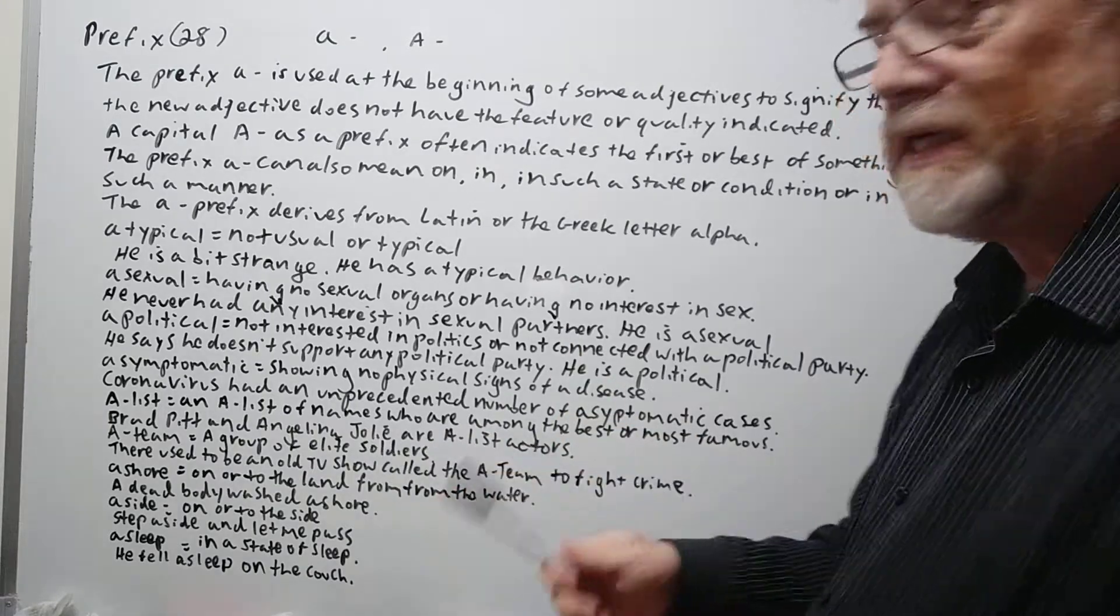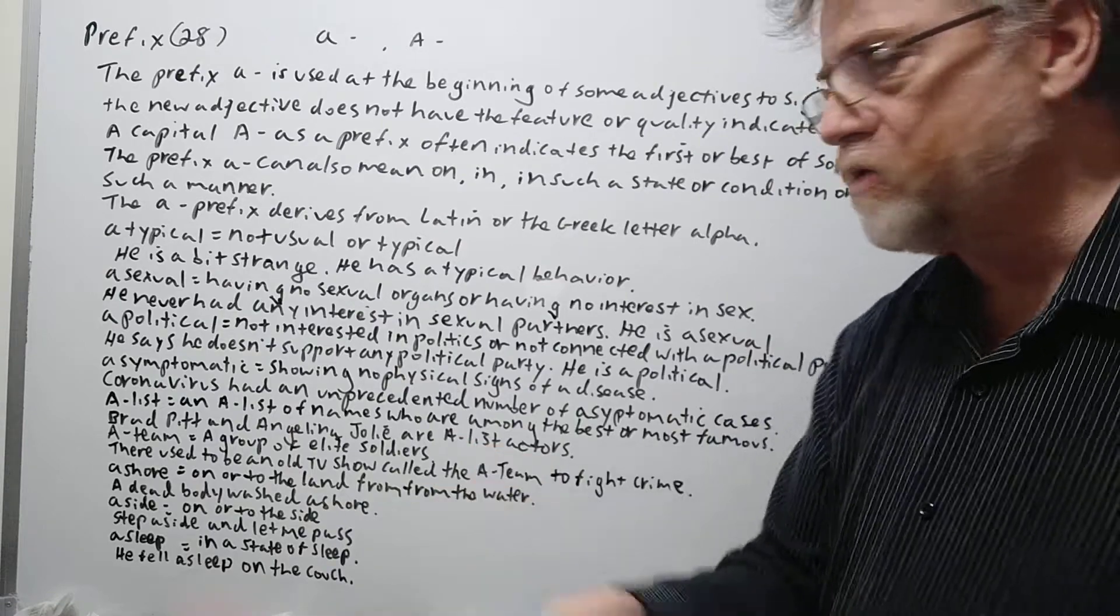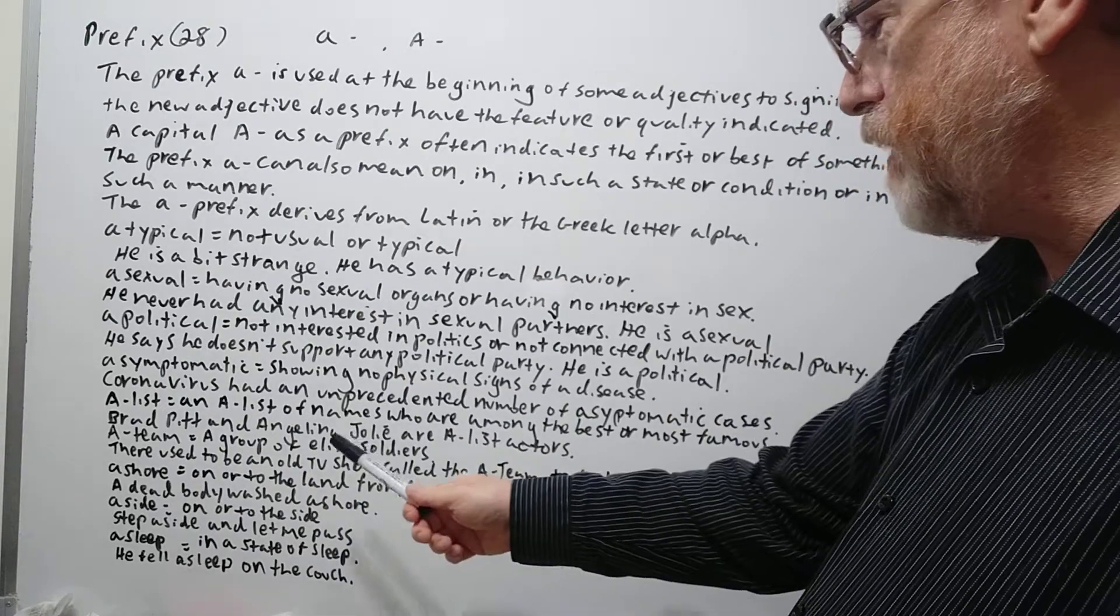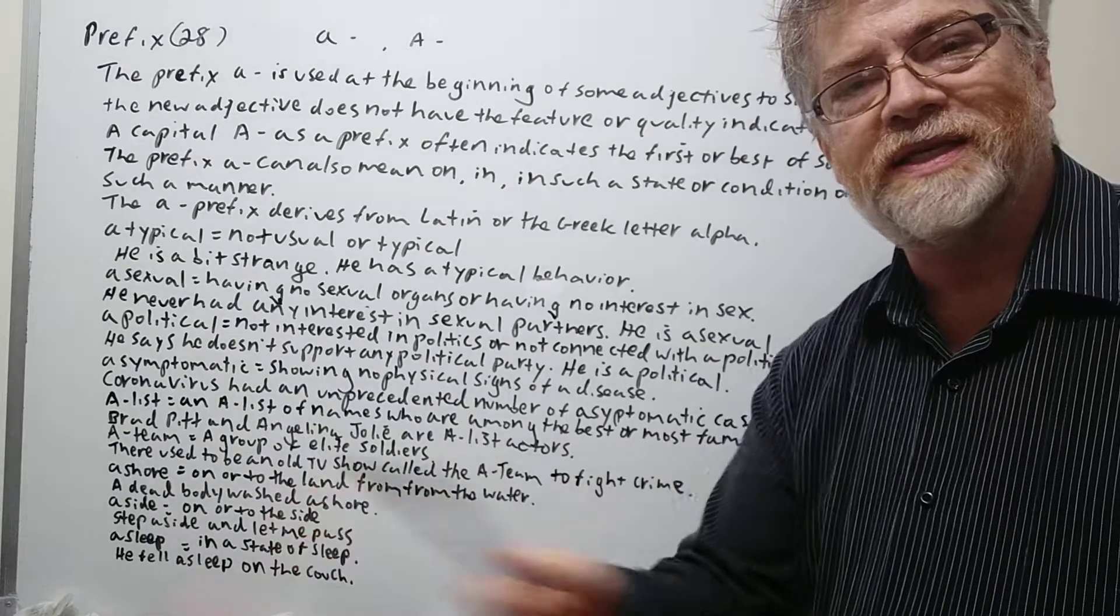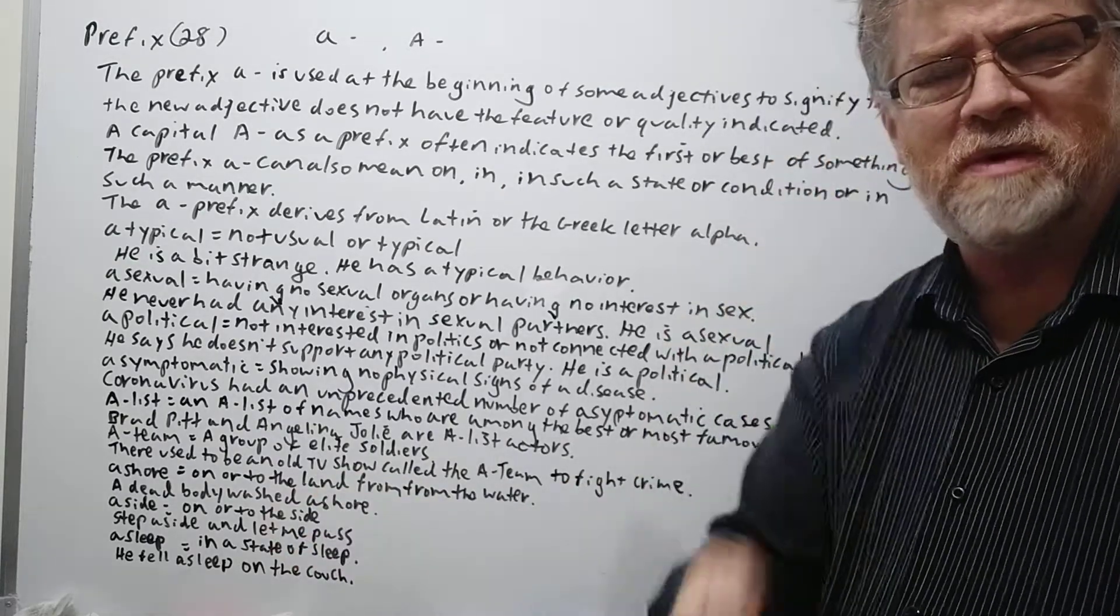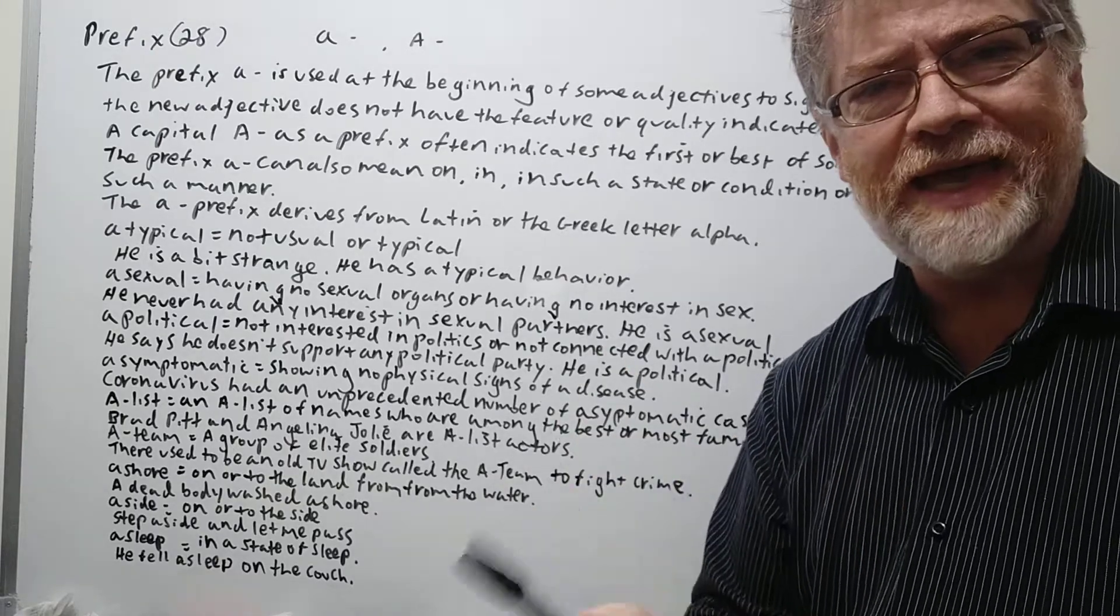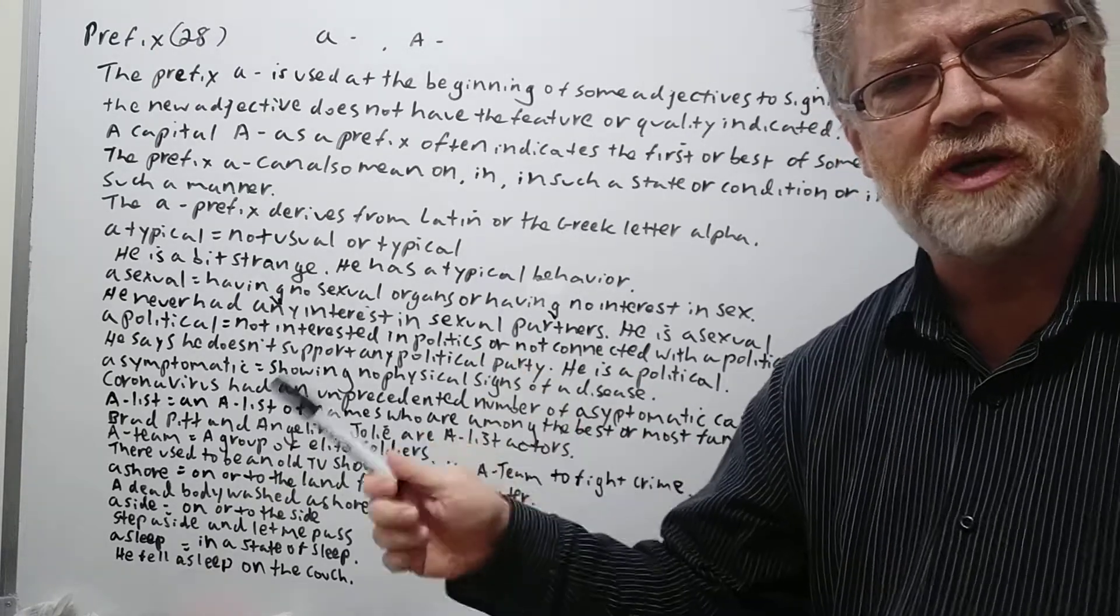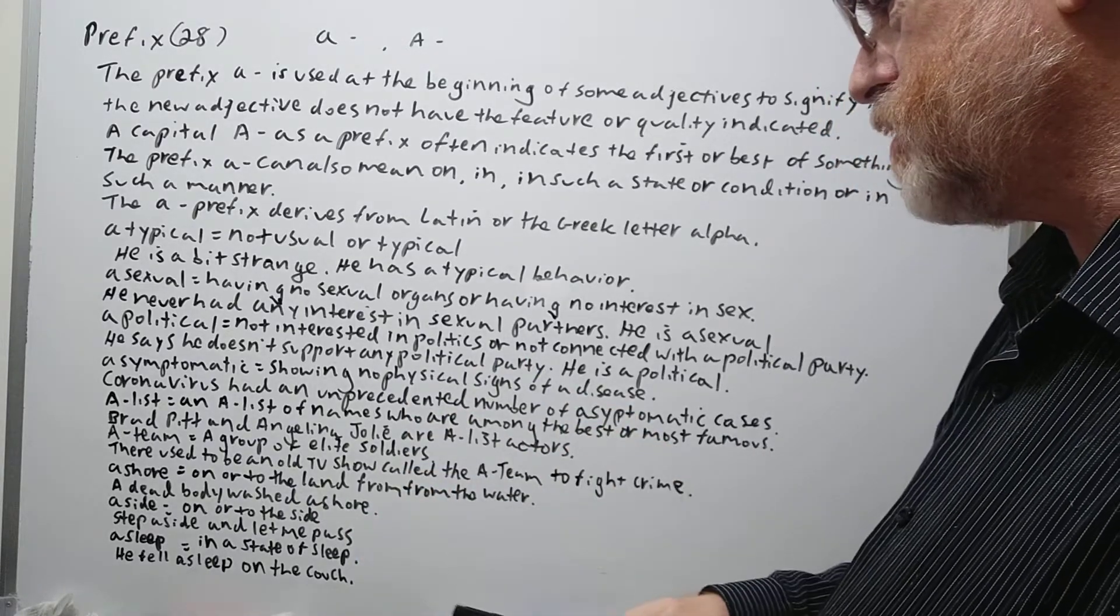A Team. A group of the elite soldiers or, you know, maybe trained police or something. There used to be an old TV show called the A-Team to fight crime. They got this group together. If you ever remember the old Mr. T or something. That was that group was called the A-Team. They were all supposedly had special skills to try to catch criminals.